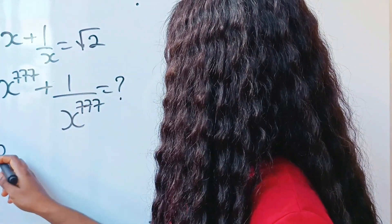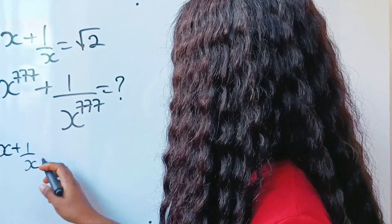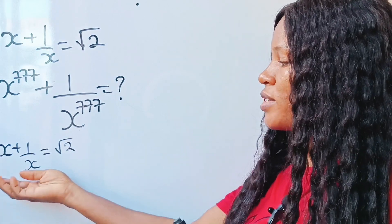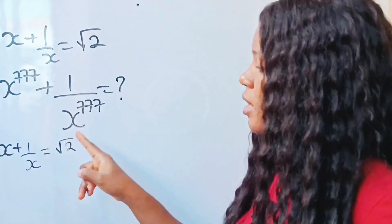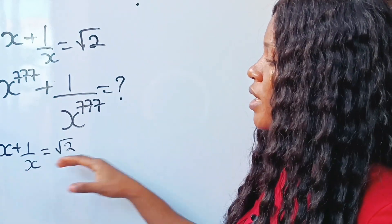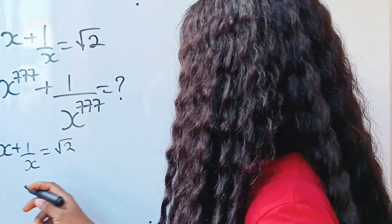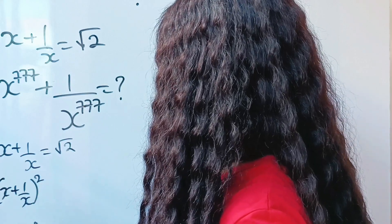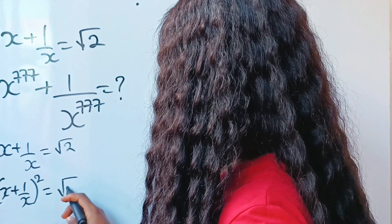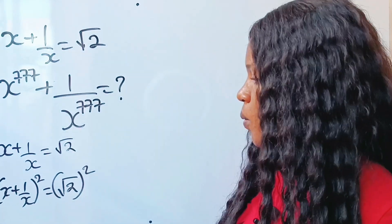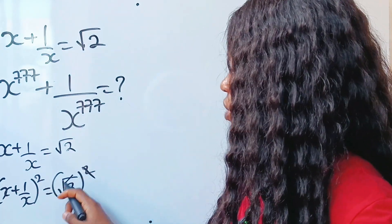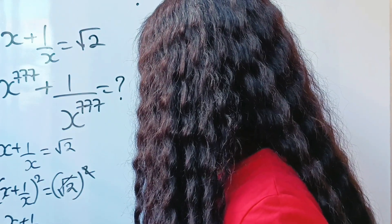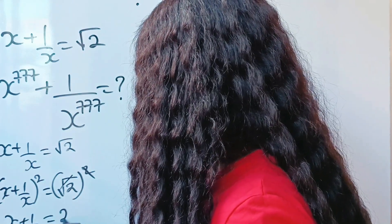We have that x plus 1 over x is equal to square root of 2. Now let's square both sides of this equation to remove this square root sign. The essence is for us to get a simplified equation. So we are going to have (x + 1/x)² equal to (√2)², which cancels the square root and gives us x + 1/x squared is equal to 2.